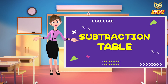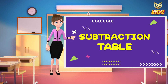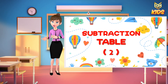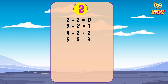Children, I hope you have understood what we will learn today — it is the subtraction table. Let's start subtraction table number 2. 2 minus 2 is equal to 0, 3 minus 2 is equal to 1, 4 minus 2 is equal to 2, 5 minus 2 is equal to 3, 6 minus 2 is equal to 4.